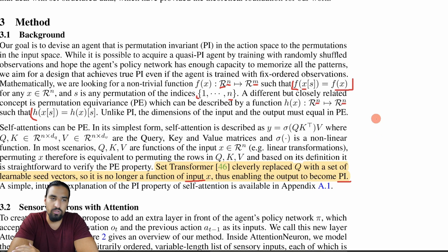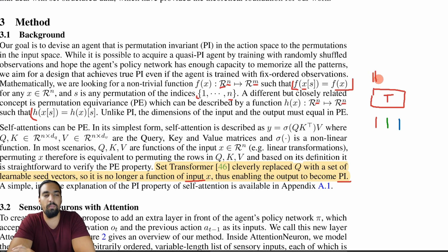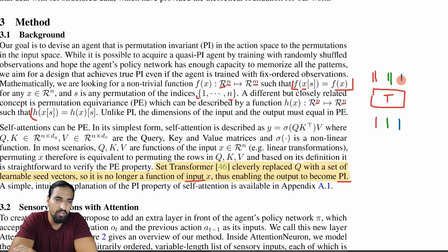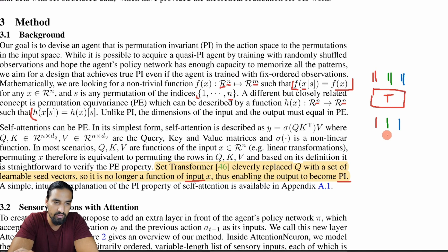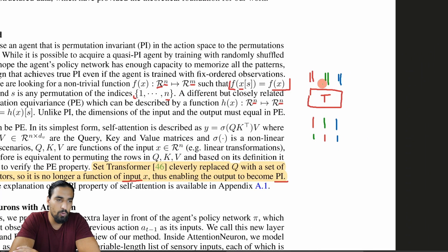Let me explain permutation equivariance quickly. Say we have three input tokens: a red token, a green token, and a blue token. We pass them into a transformer layer — the black box that does the transformer magic — and out come some novel representations: double-bar red, double-bar green, and double-bar blue. Transformers are permutation equivariant because if I permute the input — say putting green first, then red, then blue — the output will permute in exactly the same way, giving double-bar green, double-bar red, double-bar blue.